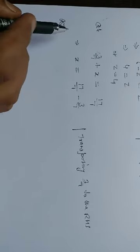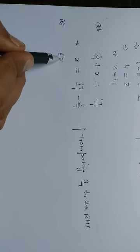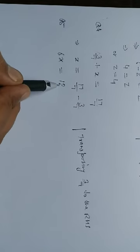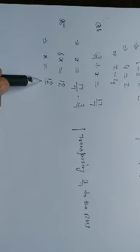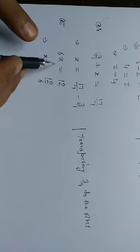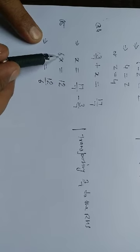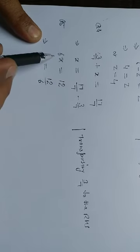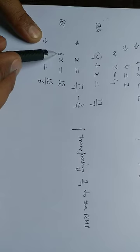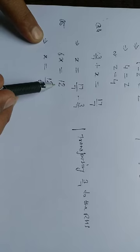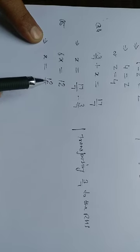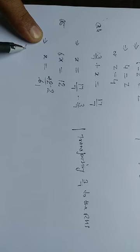Question number 5: 6x is equal to 12. So that implies x is equal to 12 upon 6. When x has any number multiplied, we take it to the right hand side and divide. 6 ones are 6, 6 twos are 12. So that implies x is equal to 2.